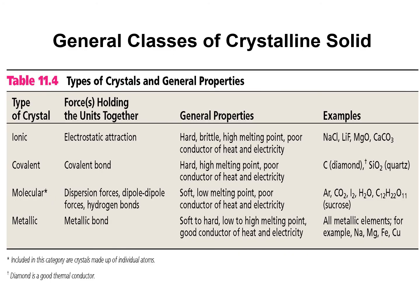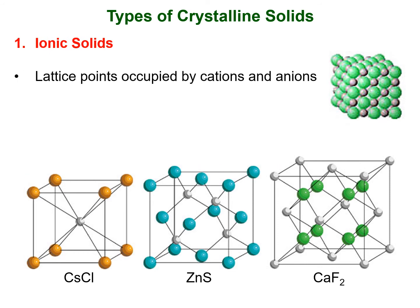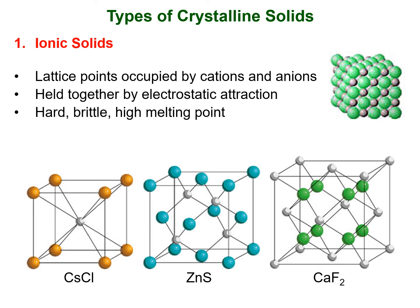There are four types of crystalline solid. The first one is ionic solid, followed by the giant covalent solid. The third one is simple molecular solid, and number four is metallic solid. For ionic solids, they are held together by electrostatic attraction forces. The lattice points are occupied by cations and anions. They are hard, brittle, and have high melting points. They are poor conductors of heat and electricity. Examples are caesium chloride, zinc sulfide, and calcium fluoride.